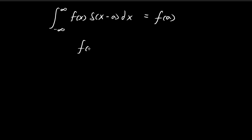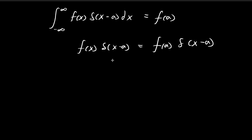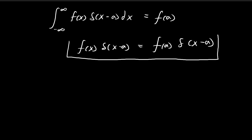We can easily prove this by using this identity. The identity is obviously true because when x equals a, the left-hand side equals the right-hand side. When x is not equal to a, both sides are just equal to 0, so the expression is true for all values of x.